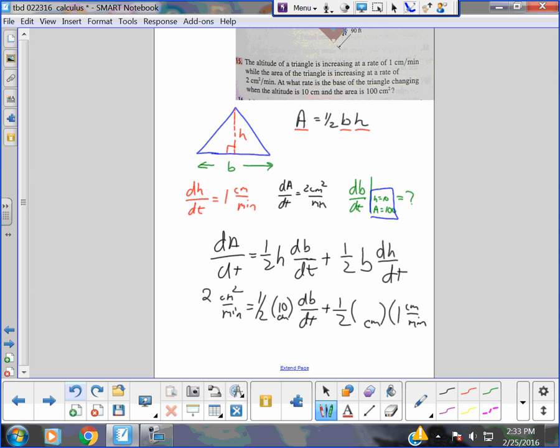Everybody, I suppose I should come back here. At that instant, you have a height of 10 and an area of 100, right? So I'm just going to go up to the original equation up here and say 100 equals one-half b times 10. Does everybody see that b has to be 20? Yeah. When you solve, b will be 20. So this becomes a 20. So it is calculated.